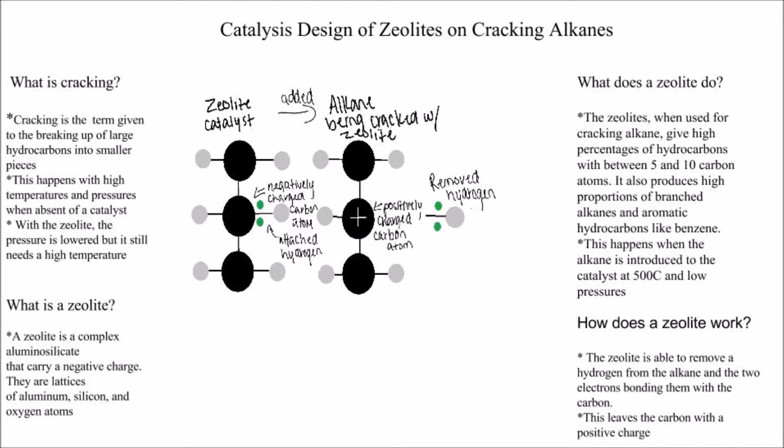A zeolite is a complex aluminum silicate that carries a negative charge. They are lattices of aluminum, silicon, and oxygen atoms.